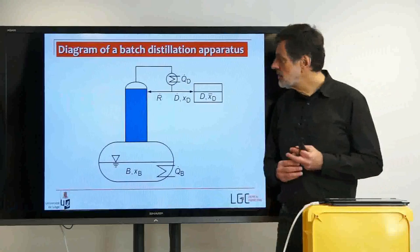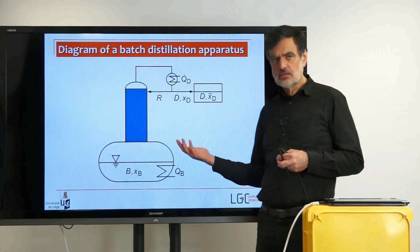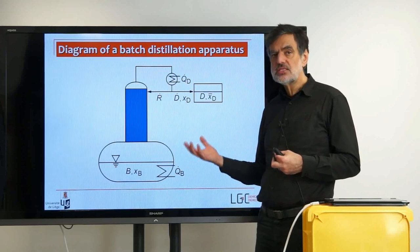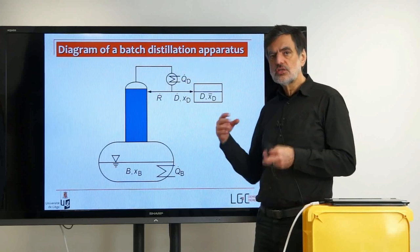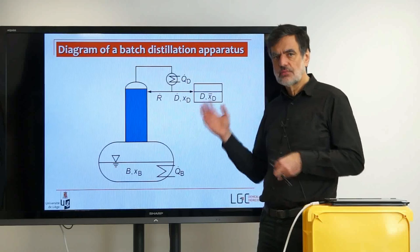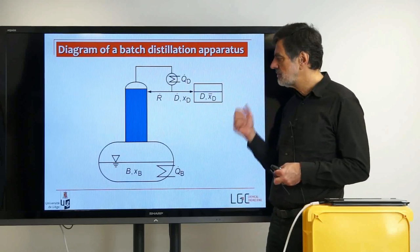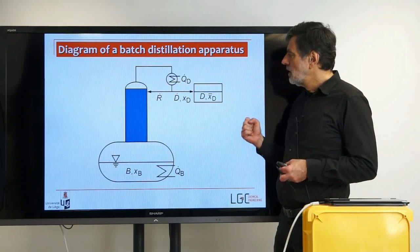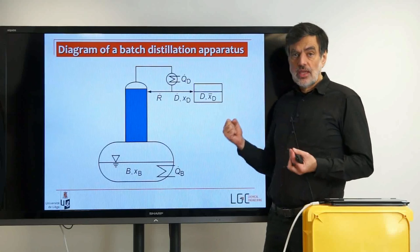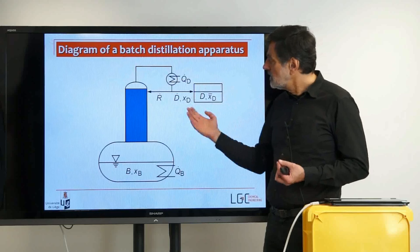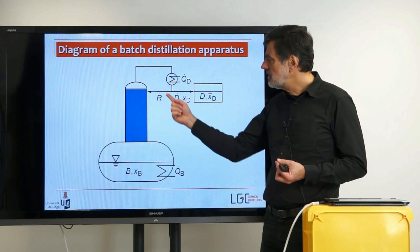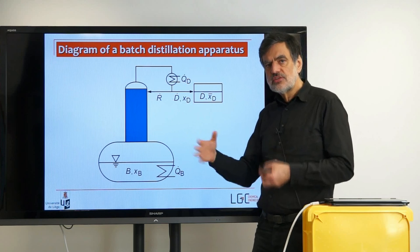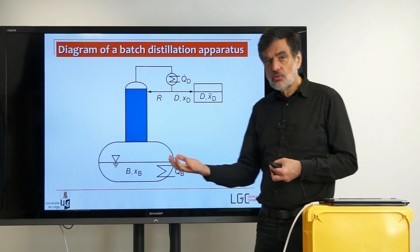Now we can consider how to operate this process. It is a batch process, which means the process will change as a function of time — everything may change, it is a transient process. We have one variable we can control from the outside: the reflux ratio.